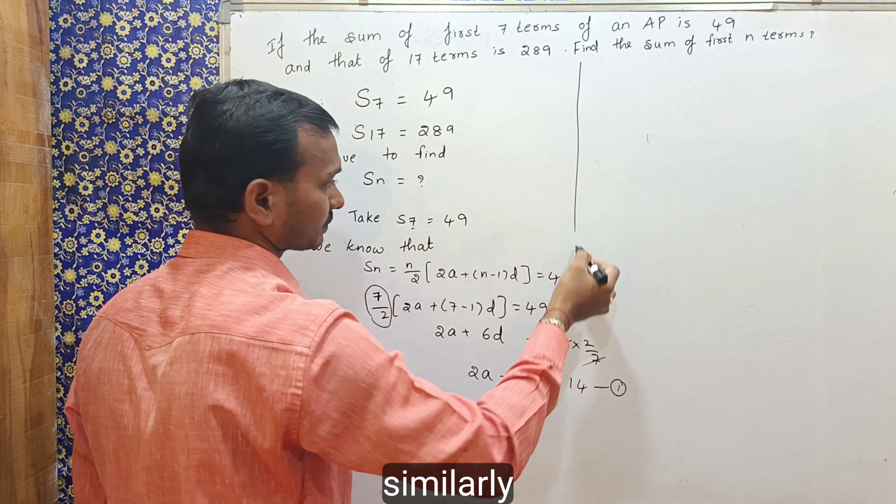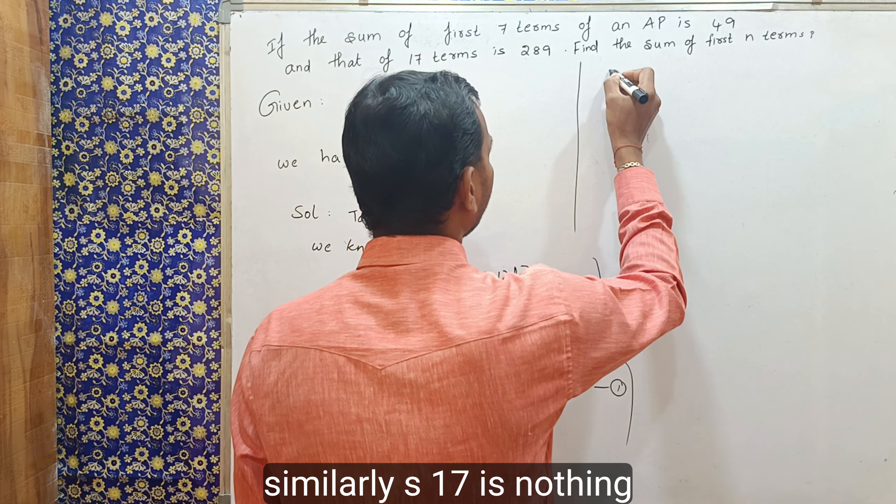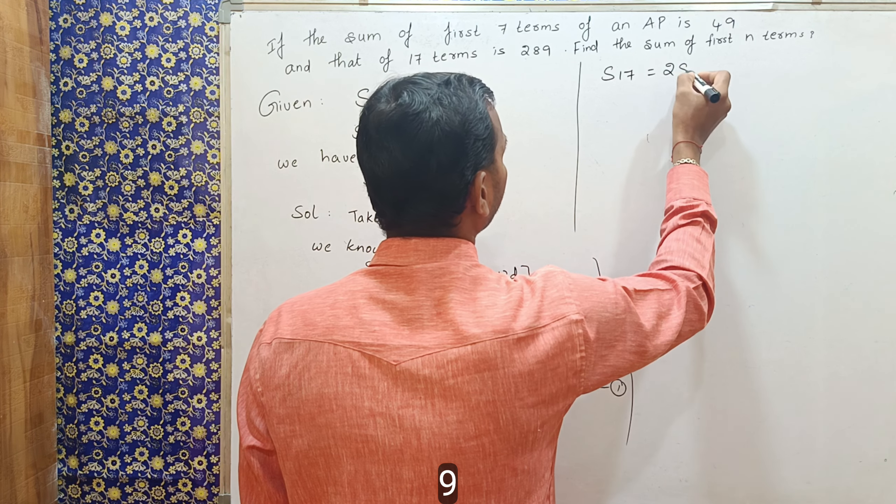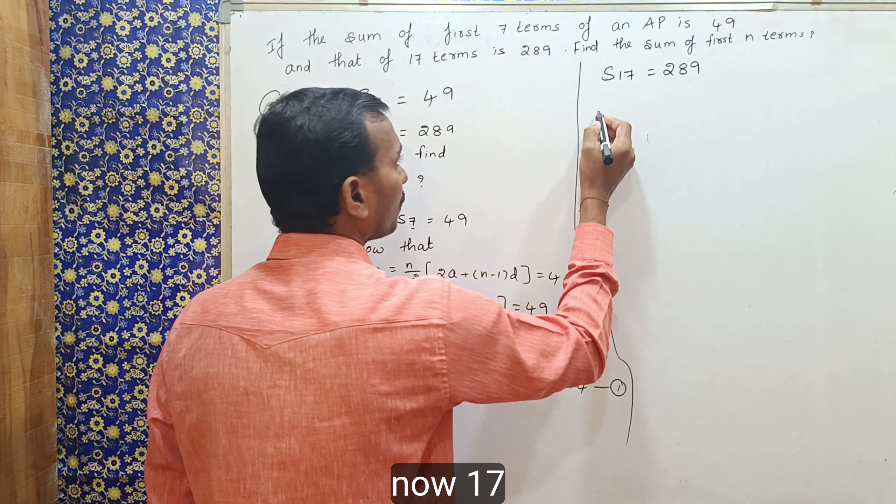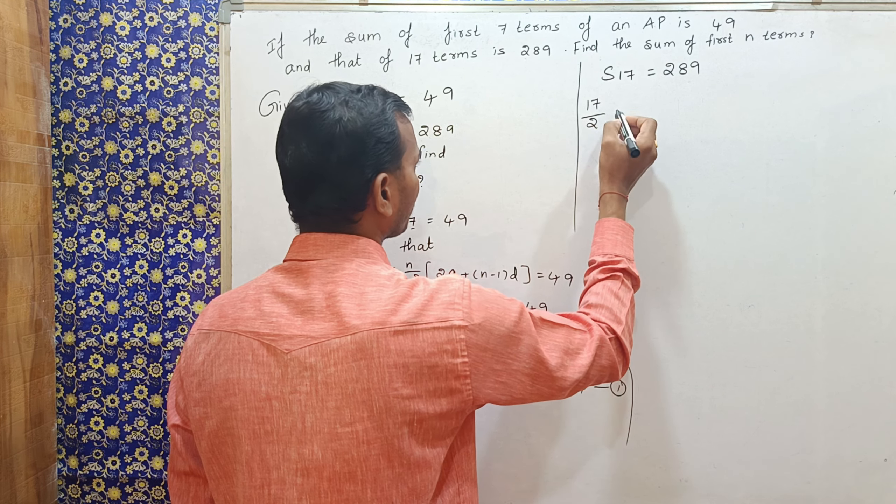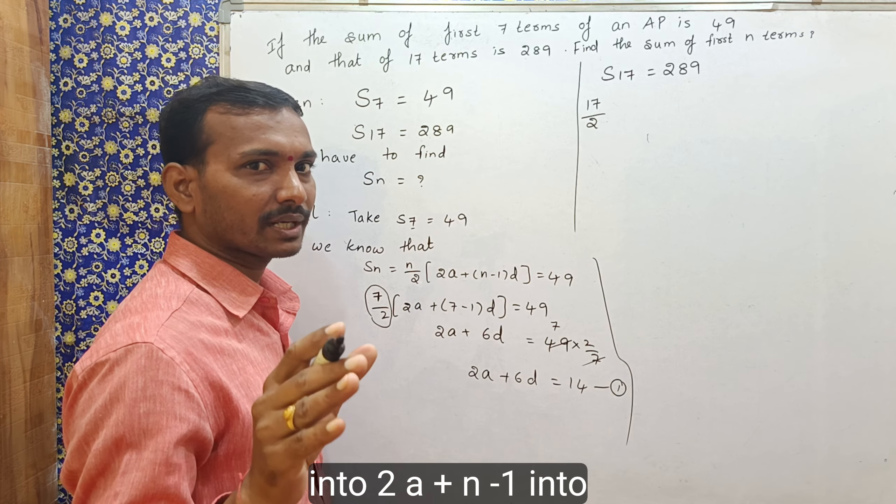Similarly, S17 is nothing but 289. Now, 17 by 2, we use the same formula, Sn formula, n by 2 into 2a plus n minus 1 into d.